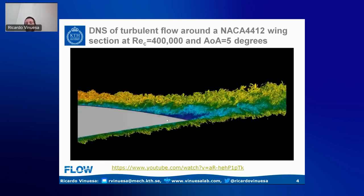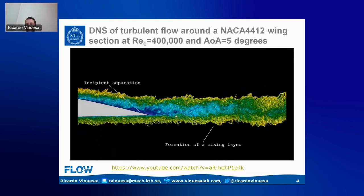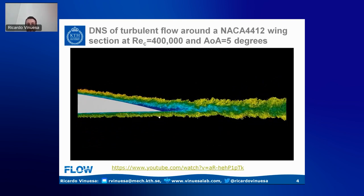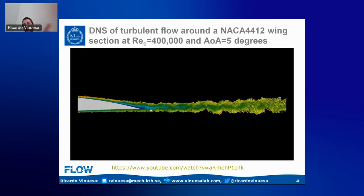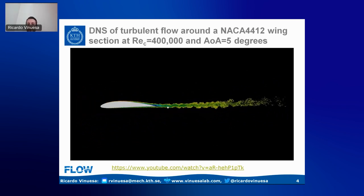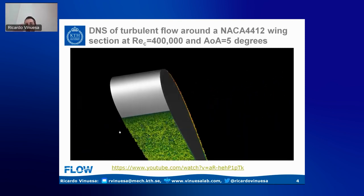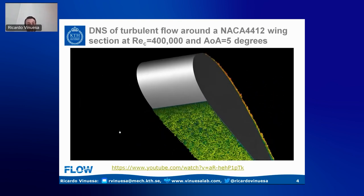We have incipient separation — the flow is attached in the mean, but 30% of the time is actually going in the negative streamwise direction. We can see how the two boundary layers merge after the shear layer downstream of the trailing edge. On the pressure side we have a mild favorable pressure gradient, which is accelerating the boundary layer and attenuating some of the turbulent fluctuations.